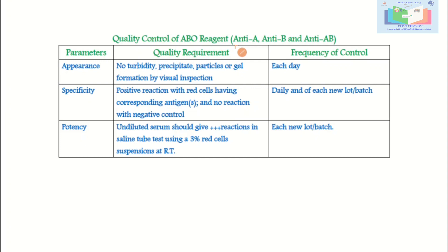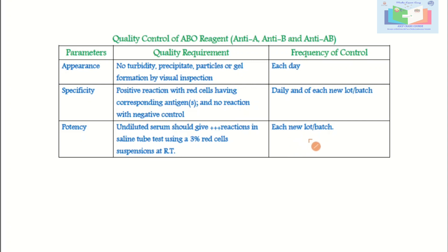Quality control of ABO reagents — NTA, NTB, and NTAB: for appearance, there should be no turbidity, precipitation, particles, or gel formation by visual inspection each day. For specificity, there should be a positive reaction with red cells having the corresponding antigens and no reaction with the negative control, done daily and with each new lot or batch verification. With A or B cells there should be a positive reaction, and with O cells (blood group O) there should be no reaction. For potency, test the undiluted serum — it must give at least a 3+ reaction in saline tube testing using a 3% red cell suspension at room temperature. This is done with each new lot or batch, commonly called lot-to-lot verification.